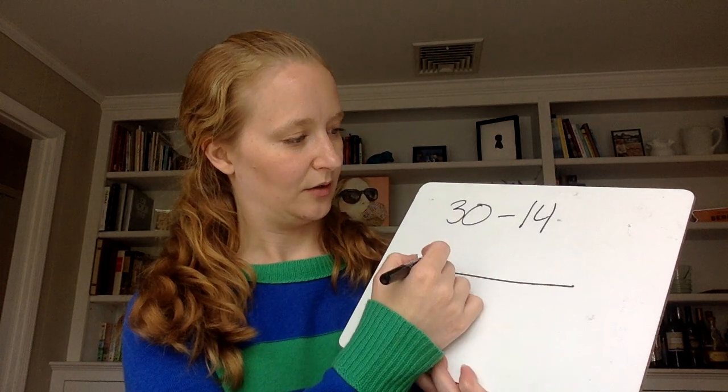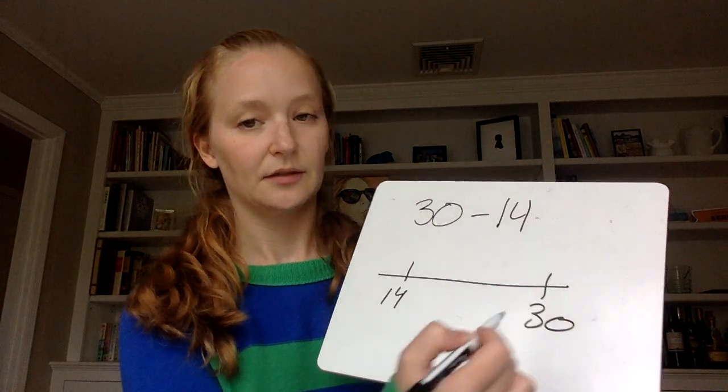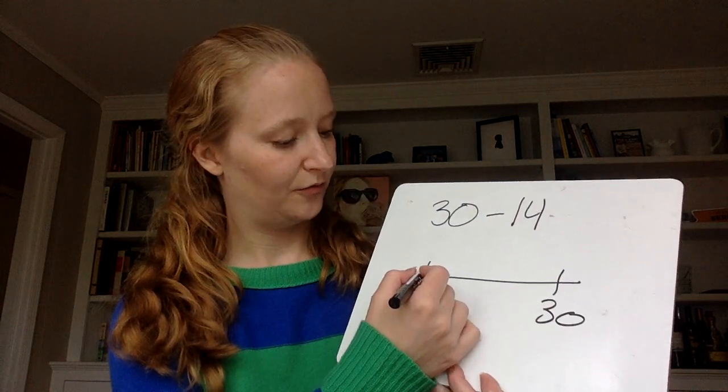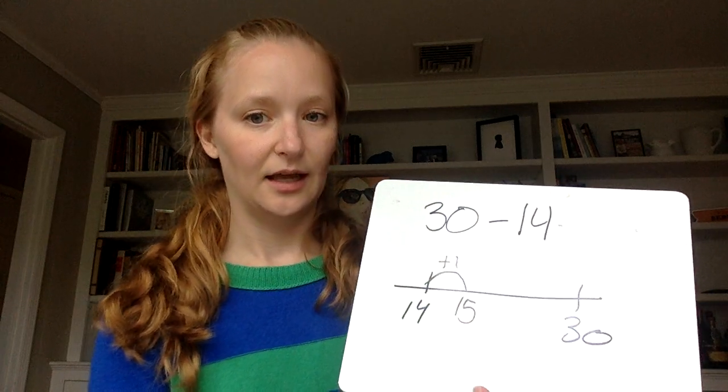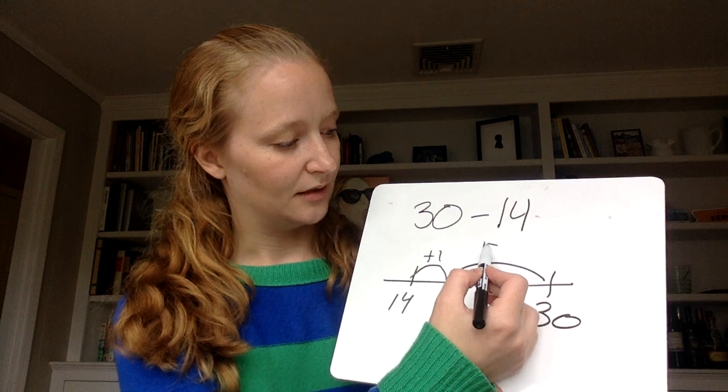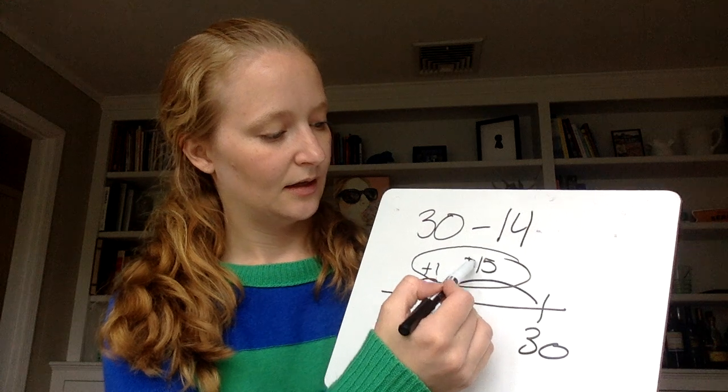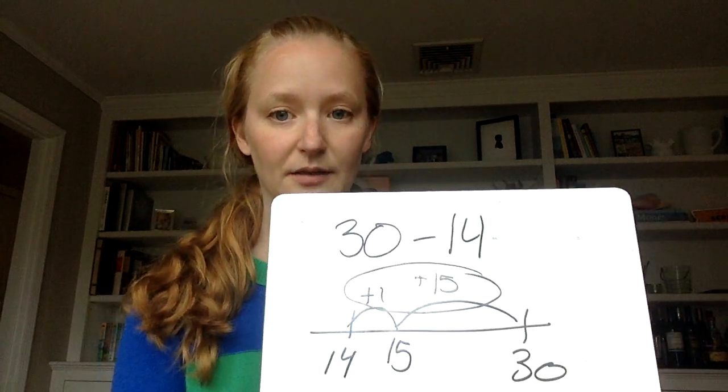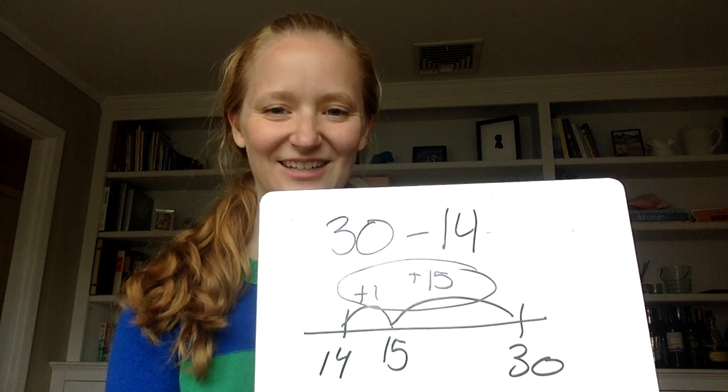So if I'm thinking again about a number line and I'm starting at my small number, I know I need to get up to my bigger number. I know 14 is 1 away from 15. And then now I know my doubles fact. 15 plus 15 is 30. Getting that answer in the middle, 15 plus 1 is 16. Good job.